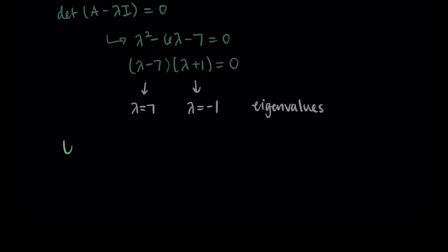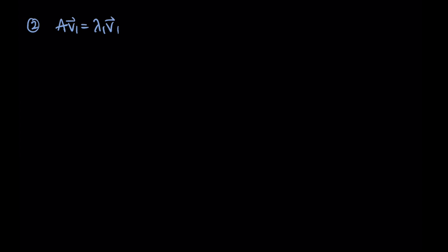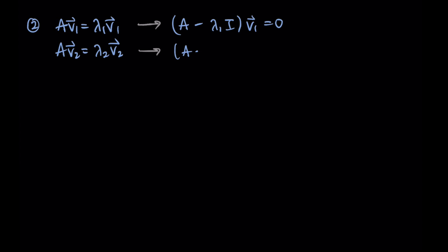I'm going to label the eigenvalues just to help us keep track of things. So let's let lambda one be negative 1 and lambda two be 7. Now we need to find eigenvectors to go with these eigenvalues. The eigenvectors come from the statement that A times the eigenvector equals lambda times the eigenvector. So A V1 equals lambda one V1 and A V2 equals lambda two V2. I like to rewrite these as A minus lambda I times the eigenvector equals the zero vector.